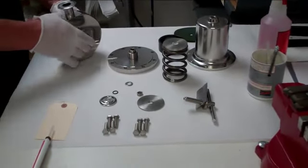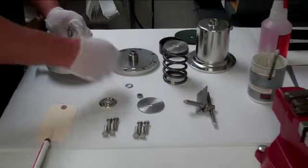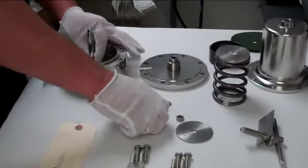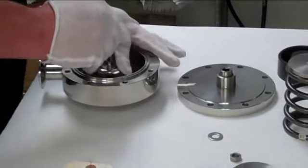First, take your body with the flange facing you and pull your stem plug assembly through the body. Now, place on your first washer and the lower diaphragm plate with the grooves facing upward.